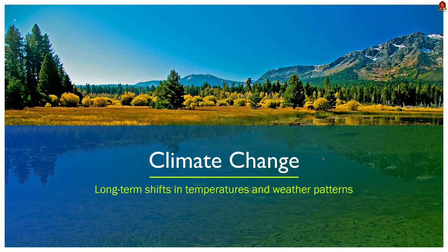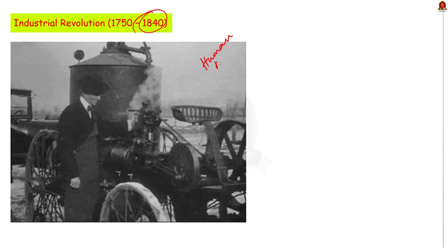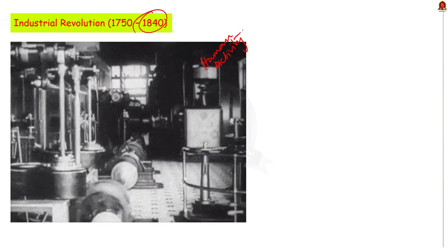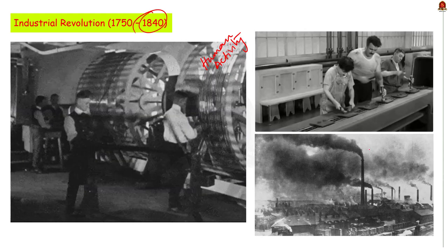What is climate change? Climate change is nothing but long-term shifts in temperatures and weather patterns. Usually, we use this term to describe global warming — that is, the ongoing increase in global average temperature and its effects on Earth's climate system. These shifts may be natural, but since the 1800s, human activities have been the main driver of climate change, primarily due to the burning of fossil fuels like coal, oil, and gas, which produces heat-trapping gases.